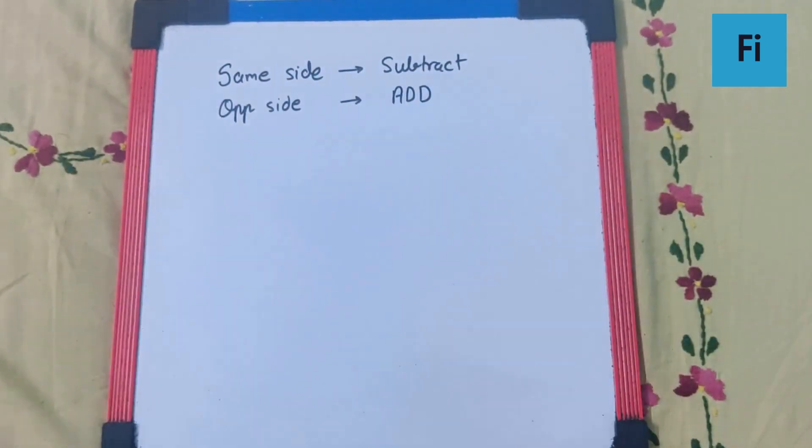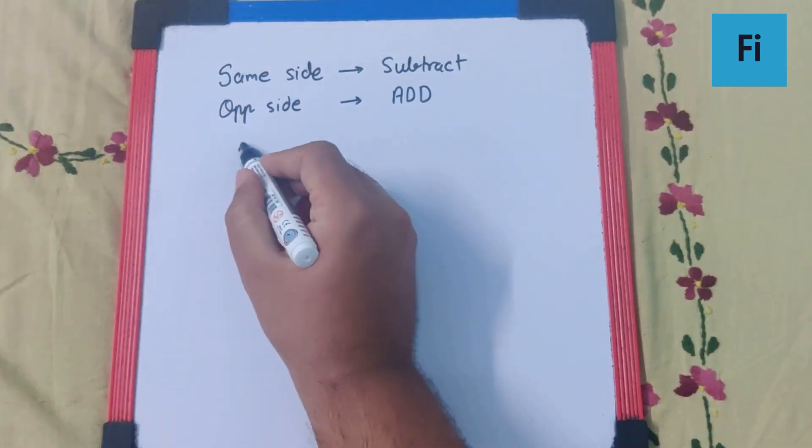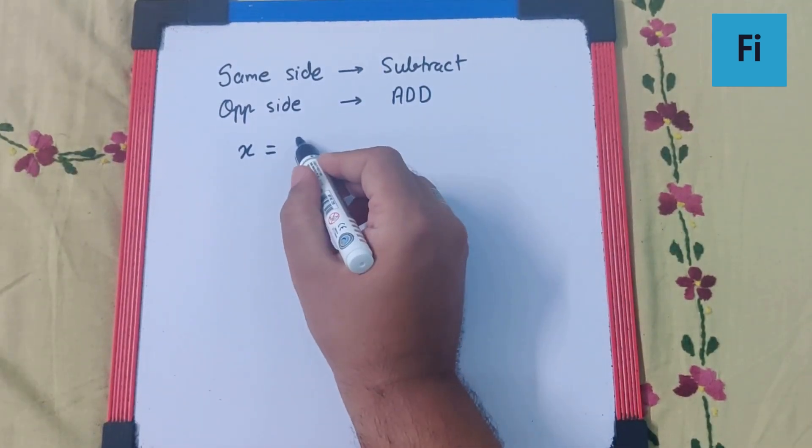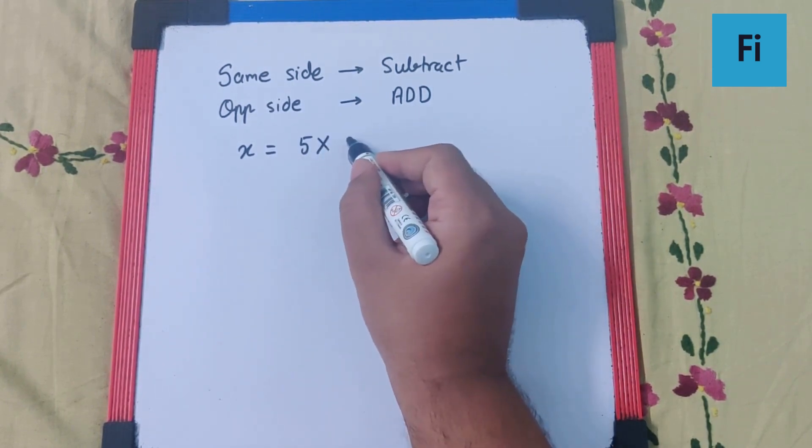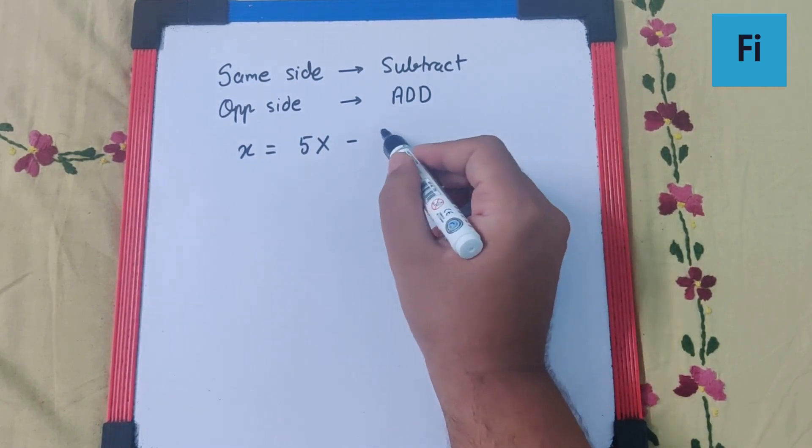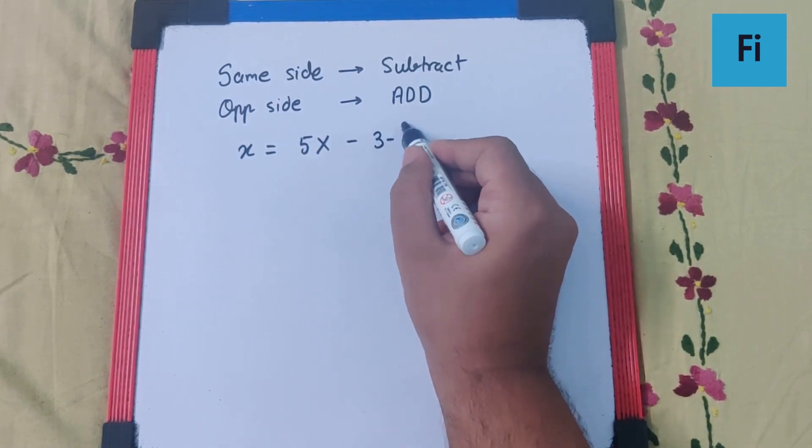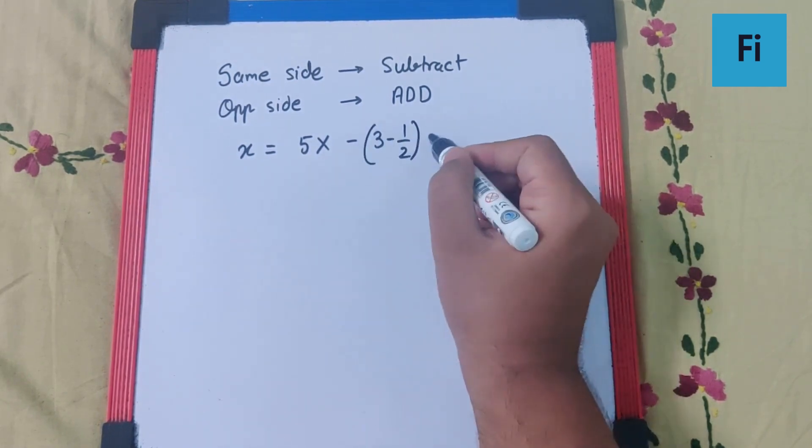This is something to remember that will always be useful. So here the distance is fifth bright fringe, that is five times the fringe width, minus the third dark fringe, so three minus half times the fringe width.